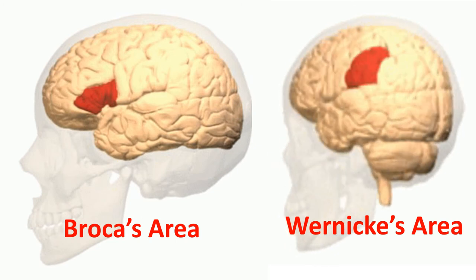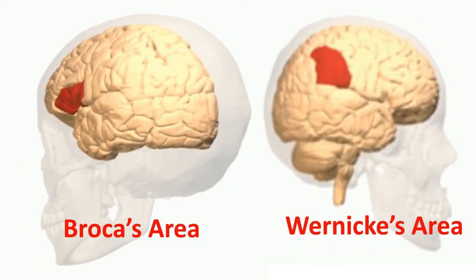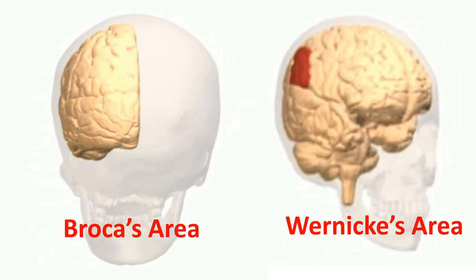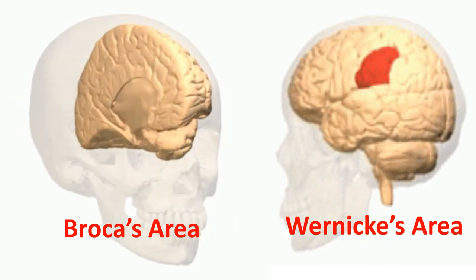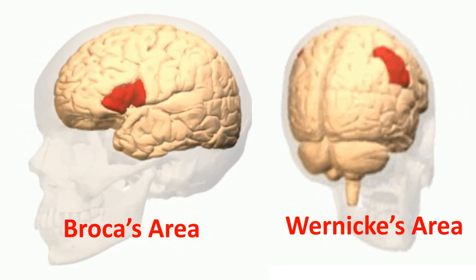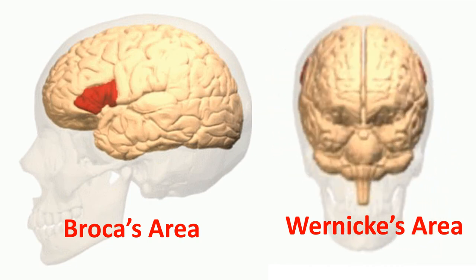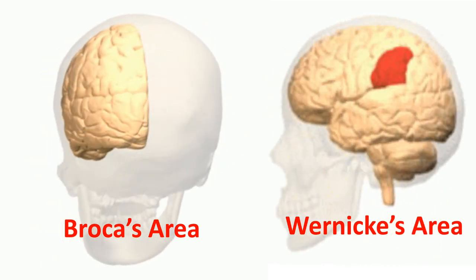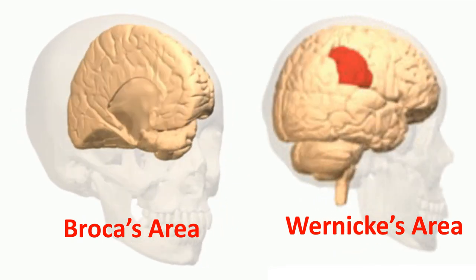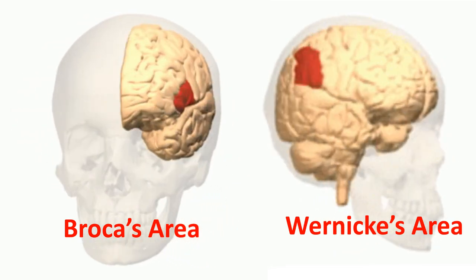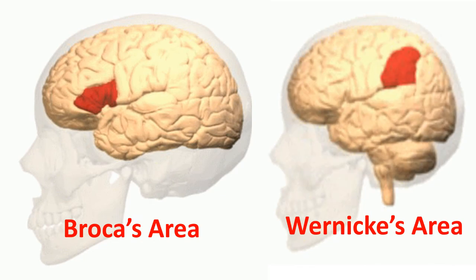Here we see the location of Broca's area in the frontal lobe and Wernicke's area in the upper back part of the temporal lobe. Both of these areas are usually on the left side — about 95 percent of people have them in the left hemisphere, but a few people have them in the right hemisphere, as shown with Wernicke's area sometimes being on the right side.